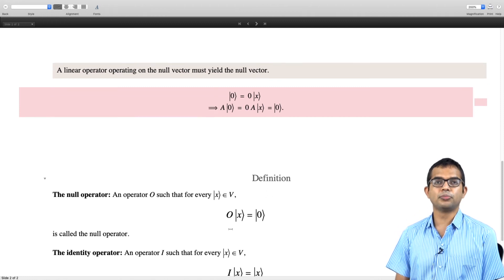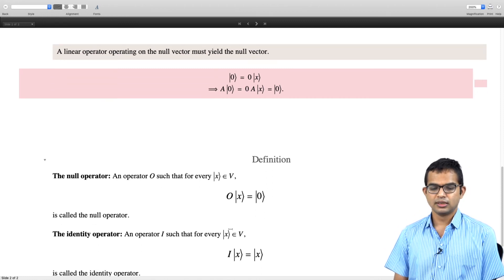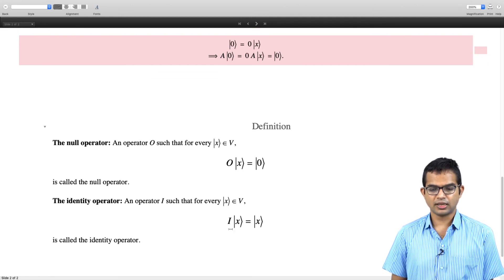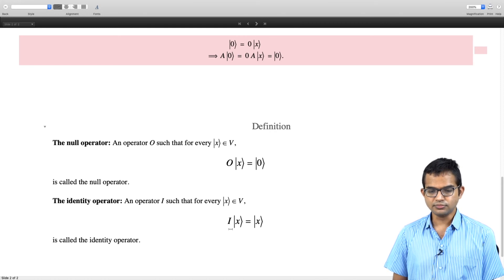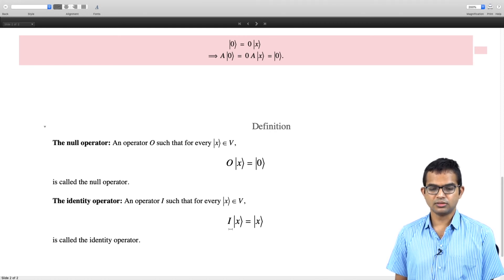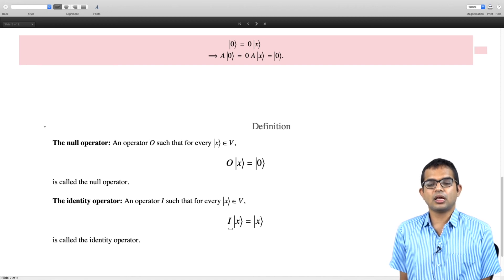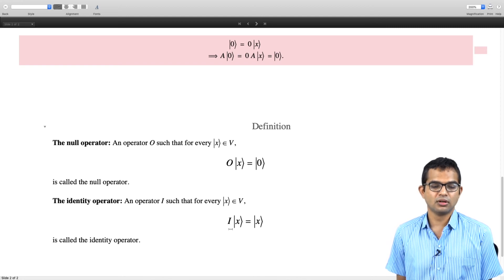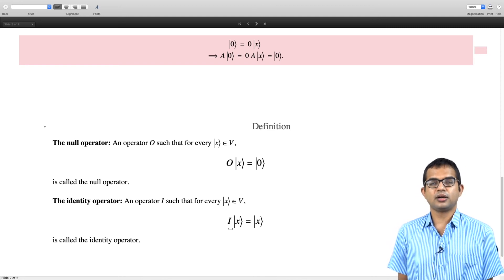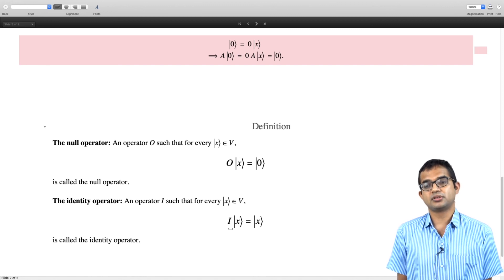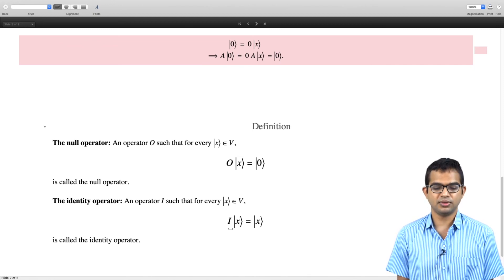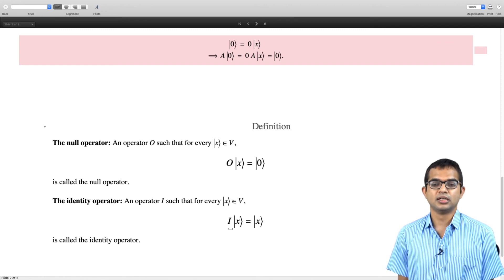We can also define two useful operators. One of them is called the null operator and the other one is called an identity operator. The null operator is such that if an operator acting on any vector will just give you the null vector, then such an operator is called a null operator. The identity operator is an operator which when it acts upon any element of your vector space, it must just return the same element itself. Then it is called the identity operator.